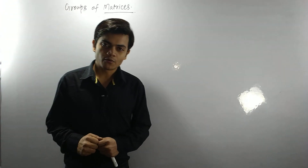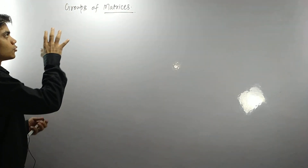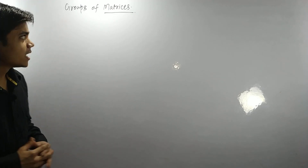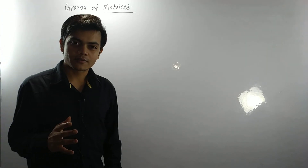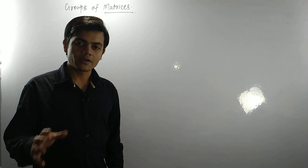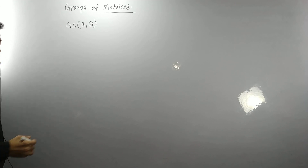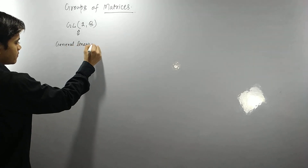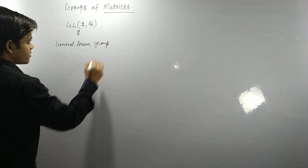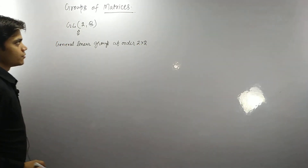Today we are discussing examples of group theory — specifically groups of matrices. In the previous lecture we discussed the group of matrices with addition as the binary operation, but here we will discuss GL(2,Q), the general linear group of order two by two.